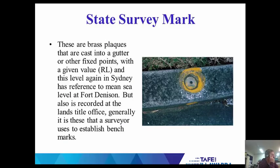From that, you will see out on the streets where our chartered surveyors will set the state survey marks. They're brass plaques cast into the gutter with a given value or RL, and this level — in Sydney — has reference to mean sea level at Fort Denison. So it's referenced back whether it's 5 metres, 10 metres, 1000, whatever it is. It's also recorded at the lands title office, and generally it is these that a surveyor uses to establish benchmarks.